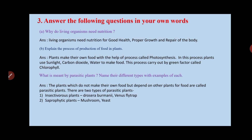The next question asks: what is meant by parasitic plants and name their different types with examples? Parasitic plants are plants which depend on other plants for their food — they cannot make their own food. There are two types: insectivorous plants, which depend on insects for nutrition, with examples Drosera and Venus flytrap; and saprophytic plants, with examples mushroom and yeast.